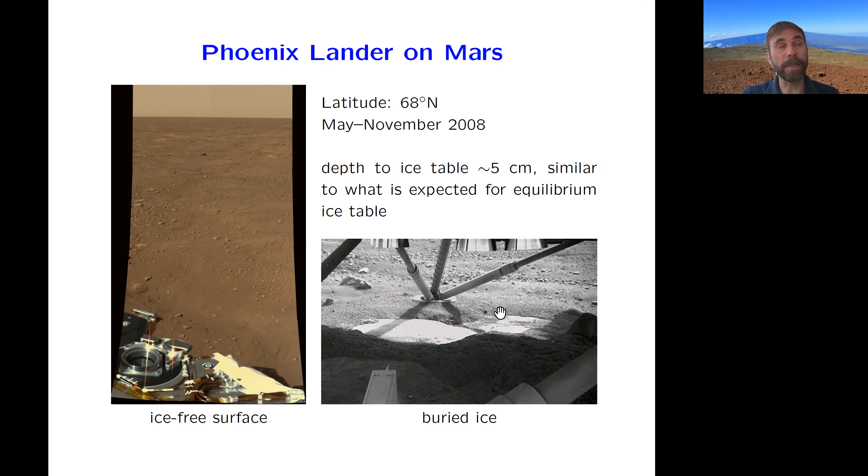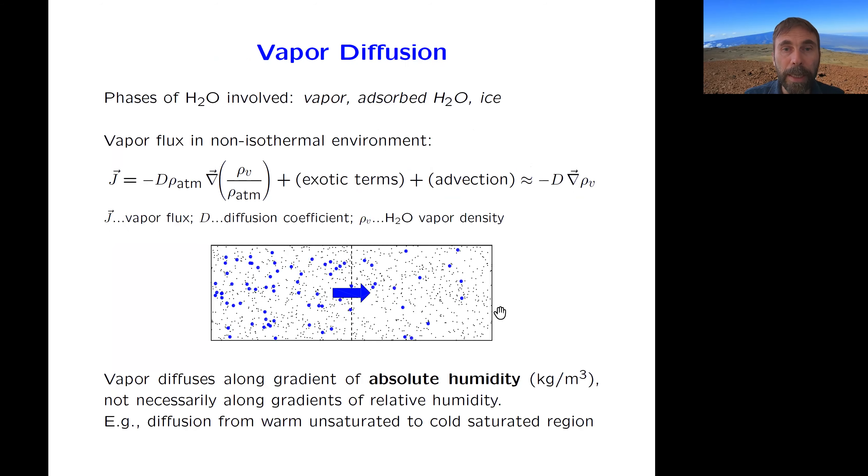So there's this contrast, but we can actually explain perfectly well with theory of vapor transport. And so the diffusion involves a gradient in vapor density, but importantly, a number of molecules per volume, not the relative humidity, but the absolute humidity. And in a non-isothermal environment, what can happen is you have a warm unsaturated region which has more water molecules per volume than a cold saturated region.